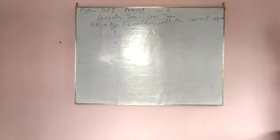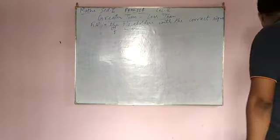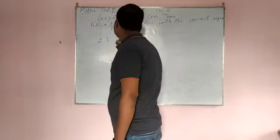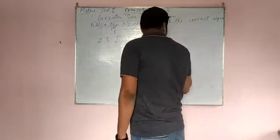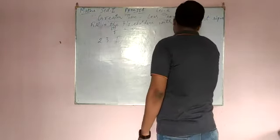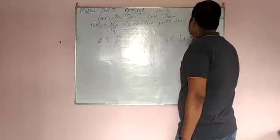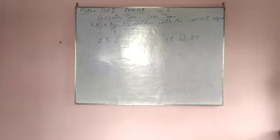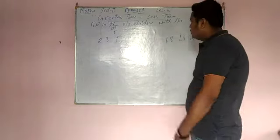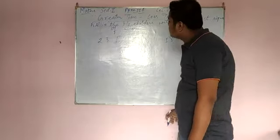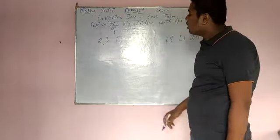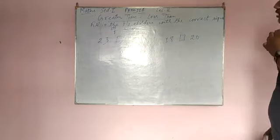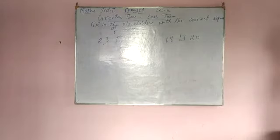This is your question. Now you see the numbers: here 23 on one side, and 20 on the other. Now you have to give the sign of greater than or less than. In 23 and 20, which one is greater? 23 is greater.